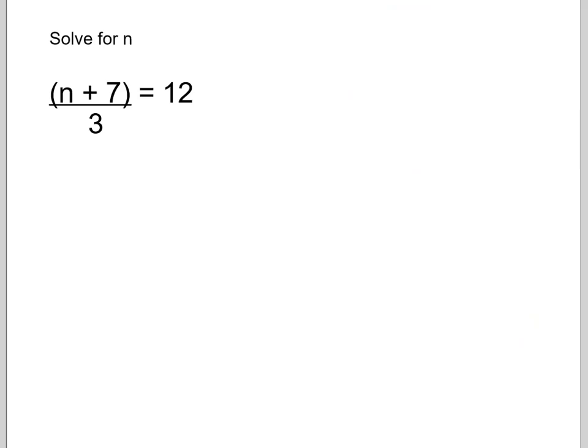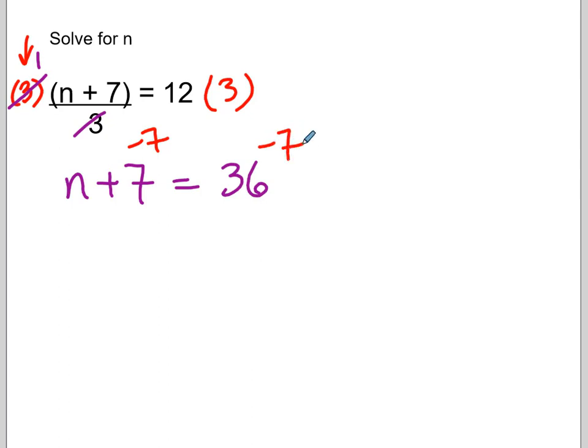Okay, solve for n. So now I'm going to approach this one a little differently. I want to go after this dividing by 3 here. So I'm going to multiply both sides by 3. Please notice where I write this. I wrote this 3 in the numerator or top location because 3 divided by 3 is 1. Okay, so I'm cancelling those out using an operation. So I'm left with n plus 7 equals 12 times 3, which is 36. And then I'm going to subtract 7. Okay, so those would cancel, and I would be left with n equals 29.